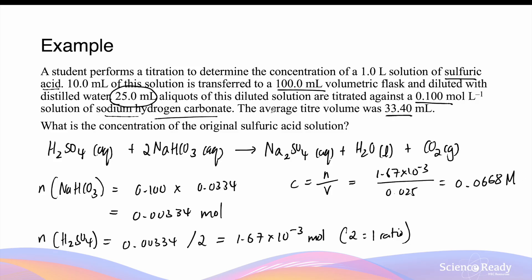For questions like this where dilutions are involved, be very careful with your final answer. This concentration of 0.0668 mol per litre is for the diluted solution, after the 10 mL of the original solution was transferred to a 100 mL flask and diluted with distilled water up to 100 mL. To find the original concentration, we need to determine the dilution factor. The original volume was 10 mL, diluted to 100 mL, so the volume increased by a factor of 10 — meaning the dilution factor is also 10. Multiply the diluted concentration by 10, leaving the answer in three significant figures.